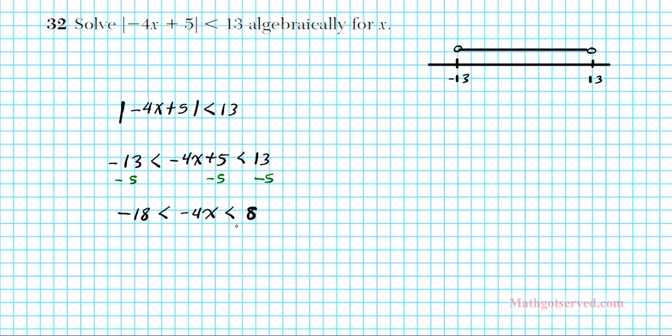Now that we have this situation, we're going to solve for x. To solve for x, we need to get rid of this negative 4. So we divide everything by negative 4, all three sides of our inequality.